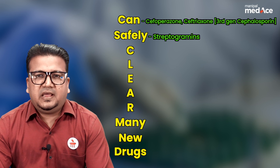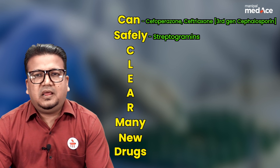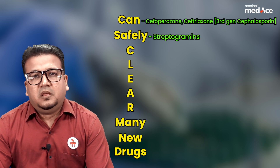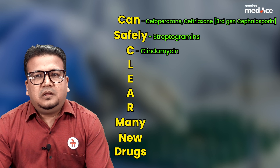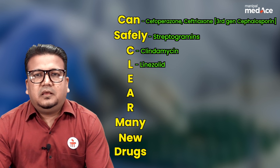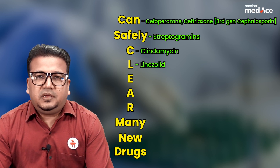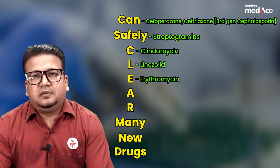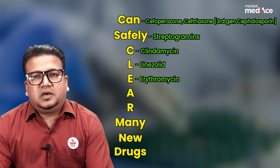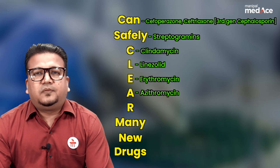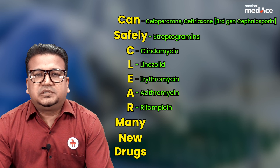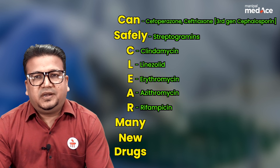CLEAR — C stands for clindamycin, L stands for linezolid, E stands for erythromycin, and A stands for azithromycin. Finally, in CLEAR, R stands for rifampicin, the very important anti-TB drug.